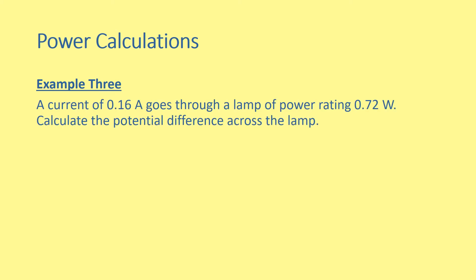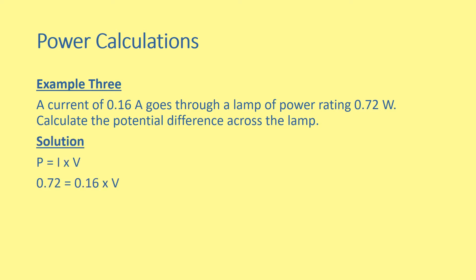Example 3 shows the other arrangement. You have a current of 0.16 amperes going through a lamp with a power rating of 0.72 watts. Calculate the potential difference. Again, write the equation P equals IV for the mark, substitute in for the second mark, then rearrange to give 4.5 volts.